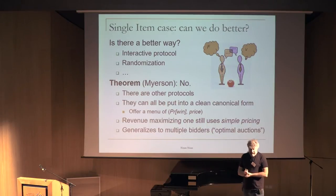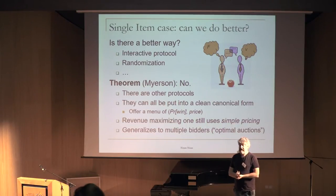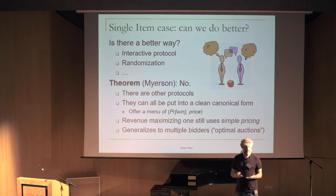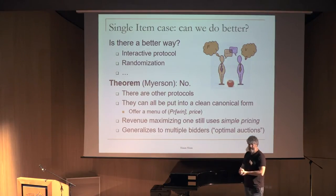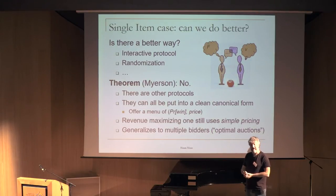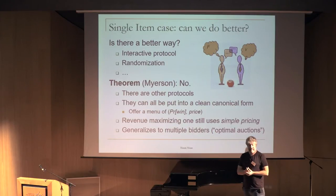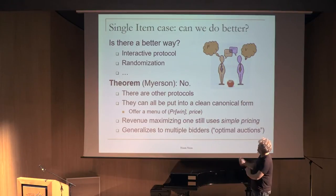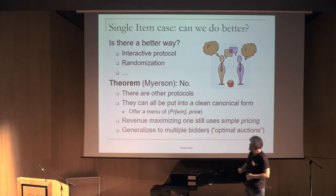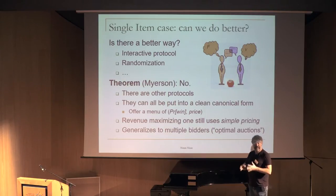The second part of Myerson's result — a difficult, non-trivial theorem — is that even though there are many other types of protocols for selling an item, the best one in terms of maximizing revenue is still one of the simple ones: posting the best price. This generalizes to multiple bidders with independent values, giving a nice theory of how to optimize revenue in an auction.